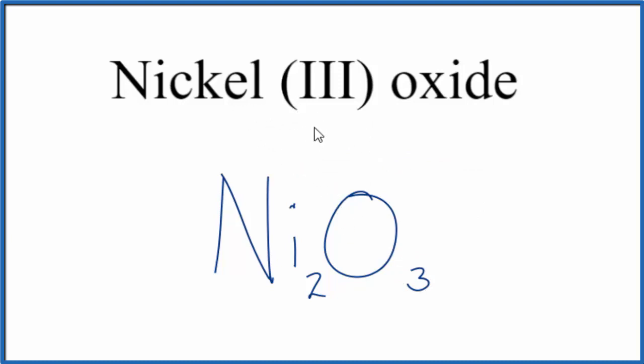That's the formula for nickel(III) oxide. Let's check our work though. We said the nickel, that was 3+, and oxygen's always 2-. Three times 2- gives us 6-. Two times 3+ gives us 6+. Six plus and six minus, that adds up to zero.